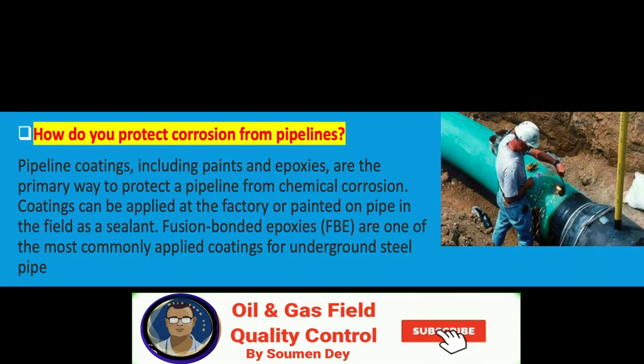What are the methods of protecting corrosion for pipelines? Pipeline coatings, including paints and epoxies, are the primary way to protect a pipeline from chemical corrosion. Coatings can be applied at the factory or painted on pipe in the field as a sealant. Fusion bonded epoxies are one of the most commonly applied coatings for underground steel pipe.